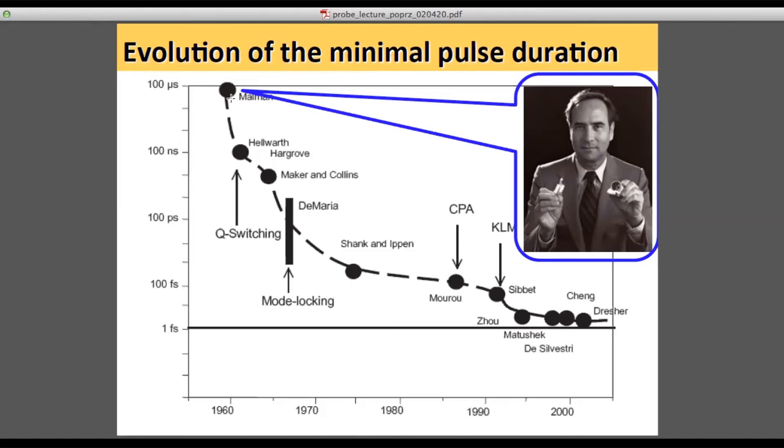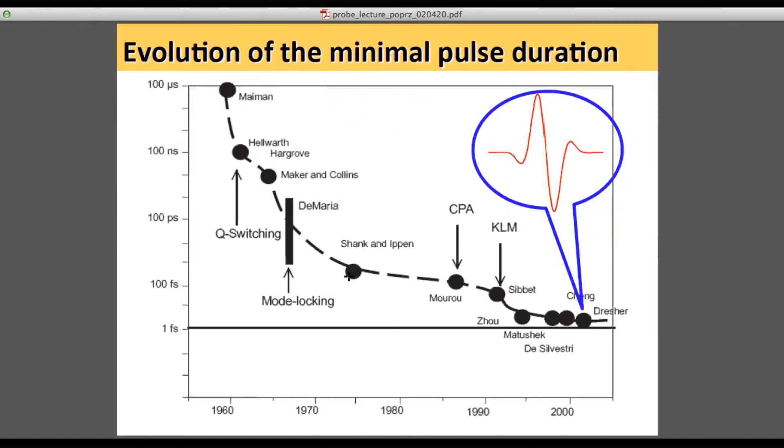But later on after the invention of the laser, due to different technical achievements, shorter and shorter pulses had been generated. And this curve shows you that very quickly we went from 100 microseconds to femtoseconds. And later on, new technical breakthroughs which included so-called Kerr mode locking allowed to shorten laser pulses even more up to the natural limit.